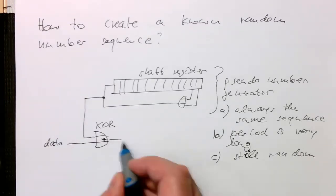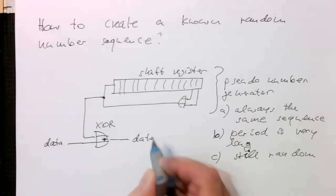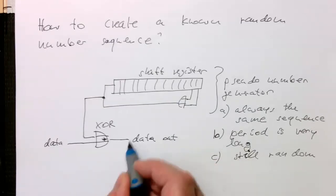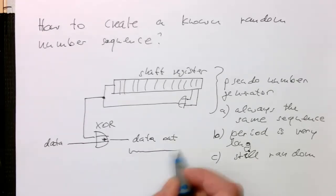Then these outputs here, so the data out, then is essentially a random sequence with our data in there. This is then randomized here.